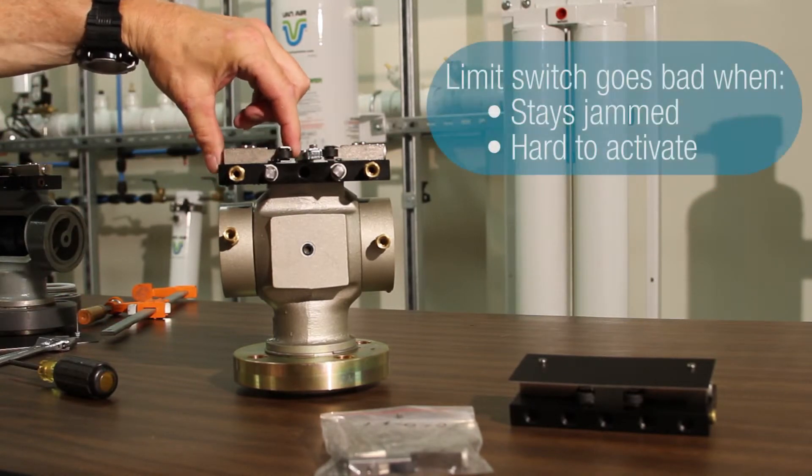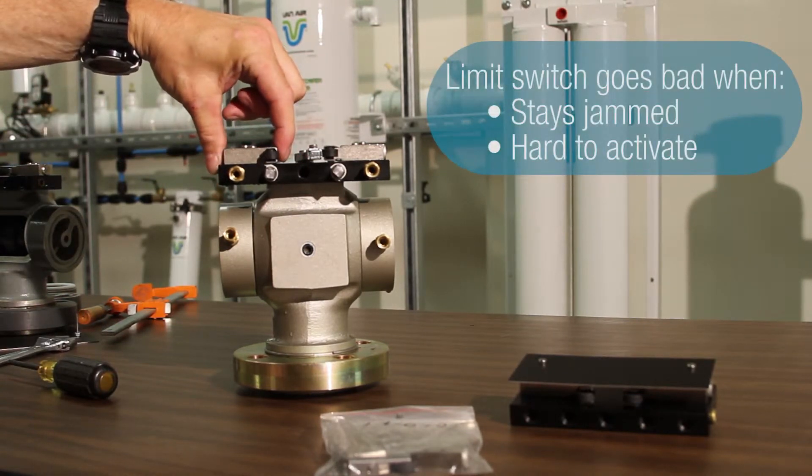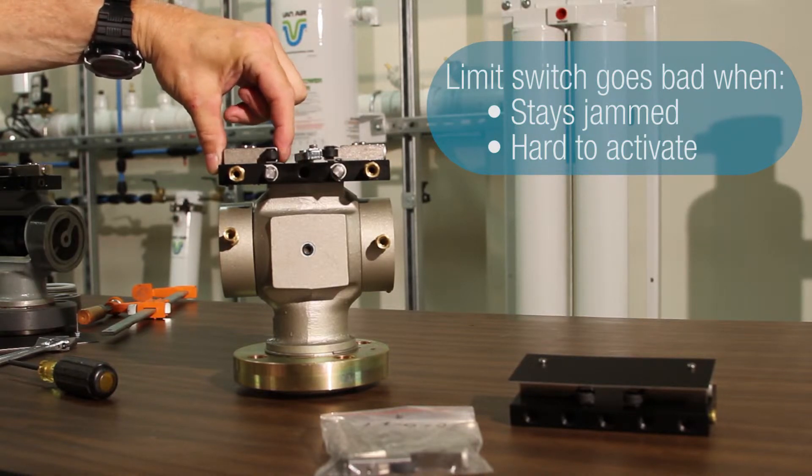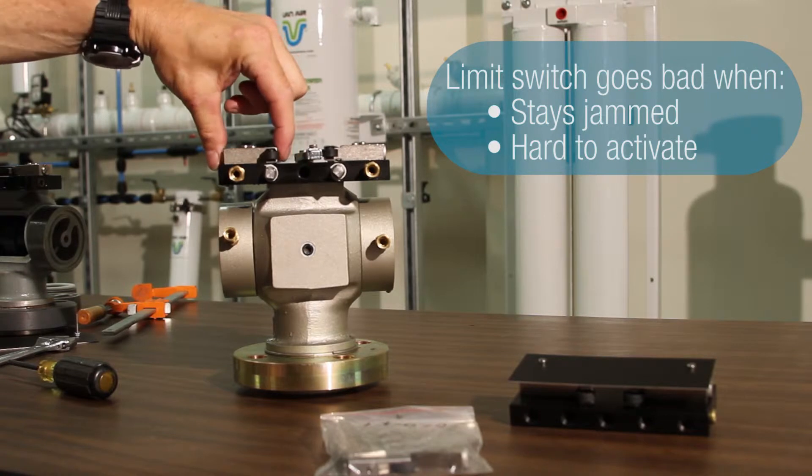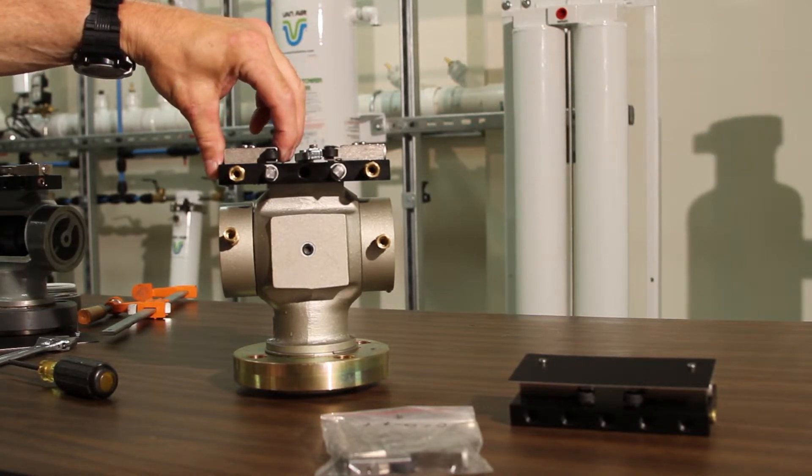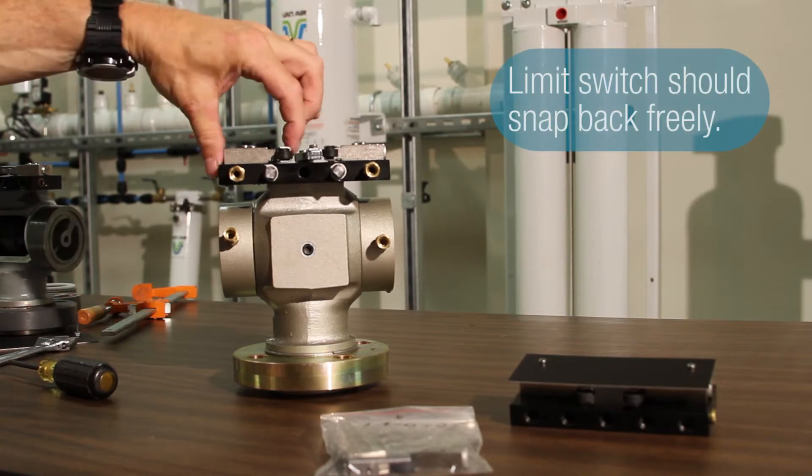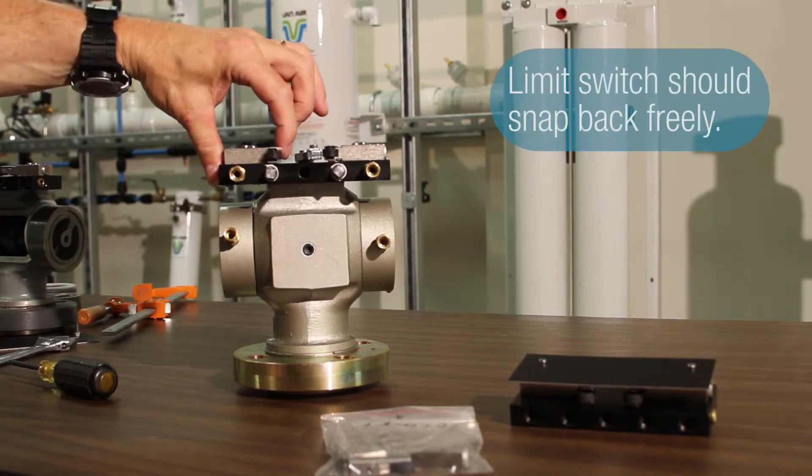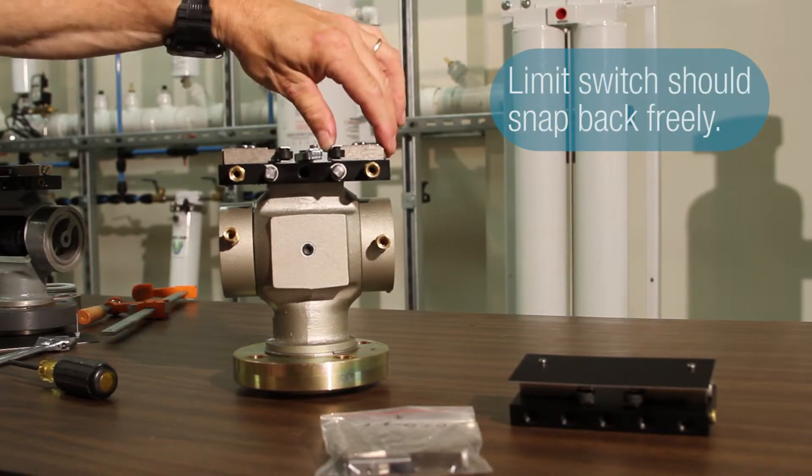Now, normally if a pneumatic limit switch goes bad, it's either going to stay jammed in the activated position, or it'll become very hard to activate. The switch should activate freely to the activated position and snap back by itself. So you should be able to see it snap back freely. If it's not doing that,